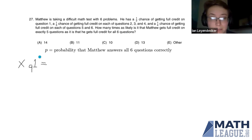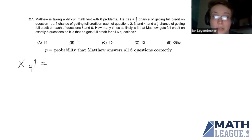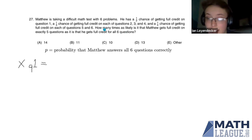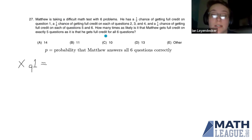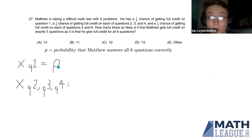Let's define p as the probability that Matthew answers all six questions correctly. In terms of p, what is the probability that Matthew doesn't get question one correct but gets all other questions correct? Since question one has a one-half chance of getting it right or wrong, we have the same probability for getting all six correct as for getting questions two through six correct with question one incorrect. So the probability of him getting question one wrong is p.